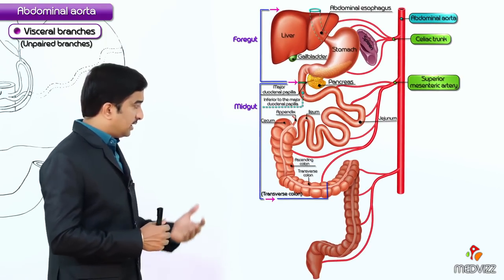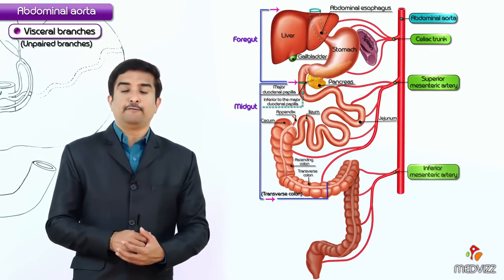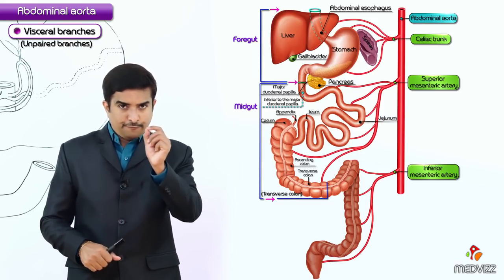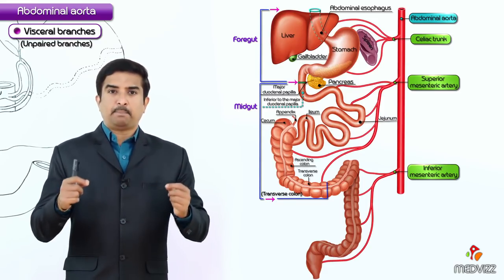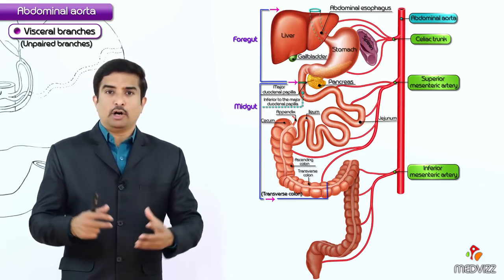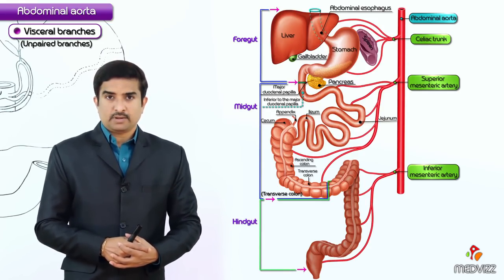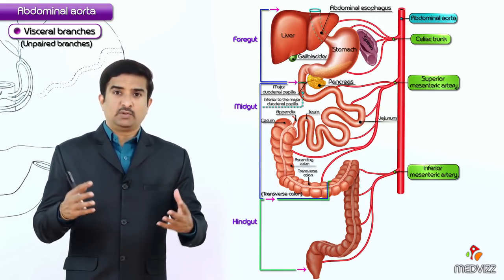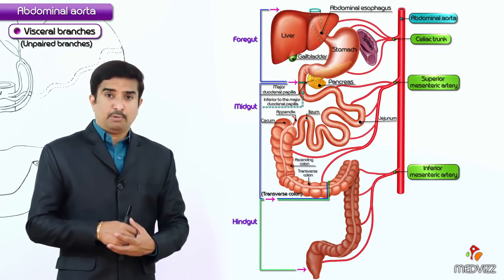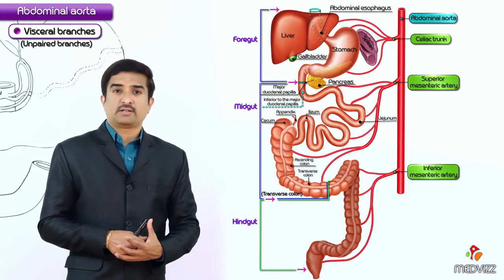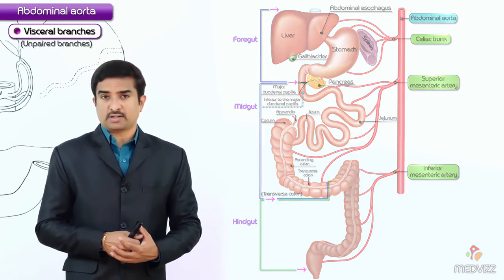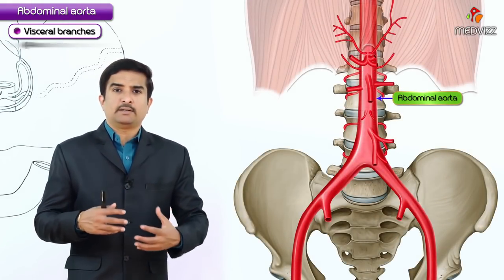The inferior mesenteric artery supplies all parts of the abdominal hindgut. These are the important unpaired branches arising from the abdominal aorta.